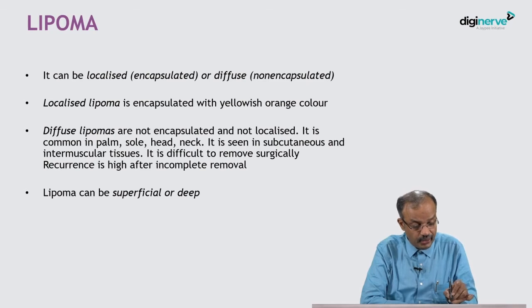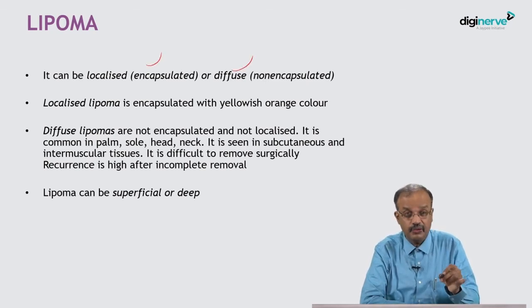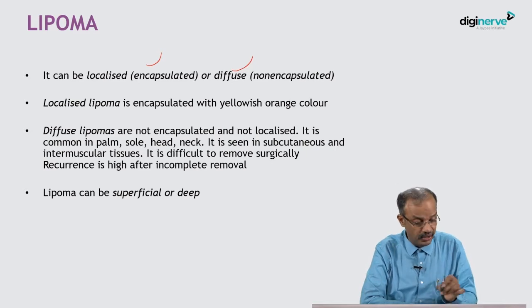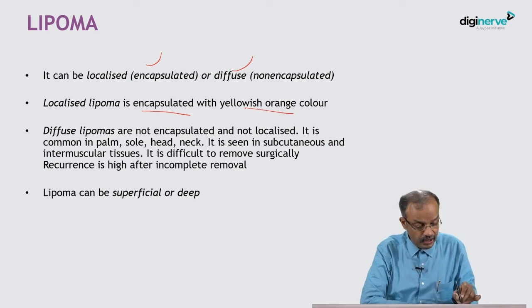Lipoma can be localized or diffuse. Localized lipoma is encapsulated with a yellowish-orange color. Diffuse lipomas are not encapsulated and not localized. They are commonly found in the palm, sole, back, and head and neck regions.